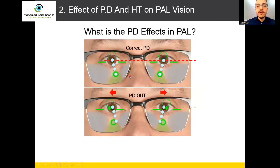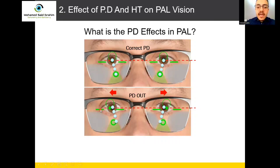What is going to happen if we have a wrong fitting BD? If we have wrong fitting BD, like in this picture, the eyes of the customer are inside and the fitting of the center is outside. The height is correct — it's at the same distance — but the BD is out, meaning the lens center is out while the center of the customer's eyes is inside.